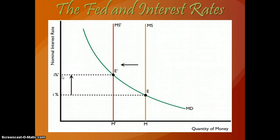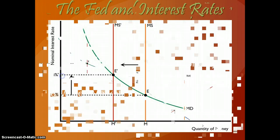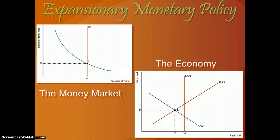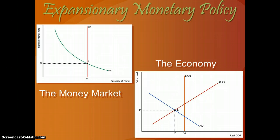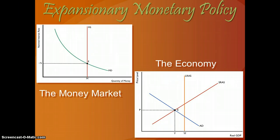When you do that, there is an impact on the aggregate demand and aggregate supply model. Open market operations influence interest rates, and interest rates then influence aggregate demand. A change in interest rate causes a change in investment. If interest rates go up, there is less investment because the cost of borrowing has gone up, and some investment projects are no longer viable because the return on investment is lower than the new interest rate. If interest rates go down, we should expect more investment and more consumption — both part of GDP — causing aggregate demand to shift.